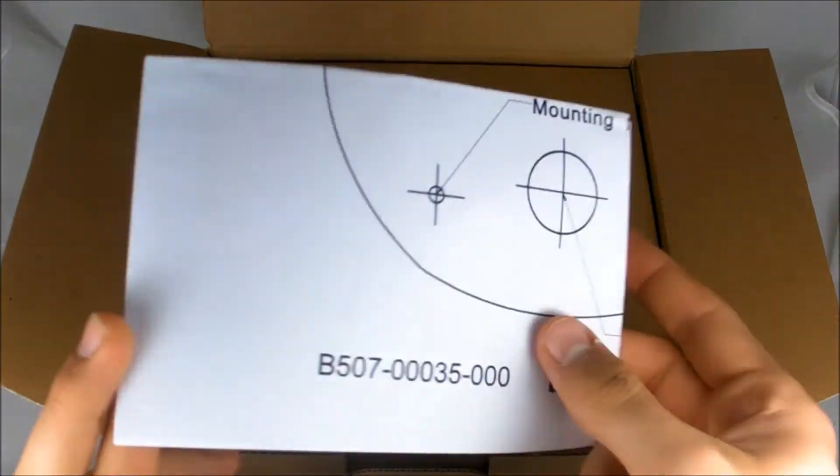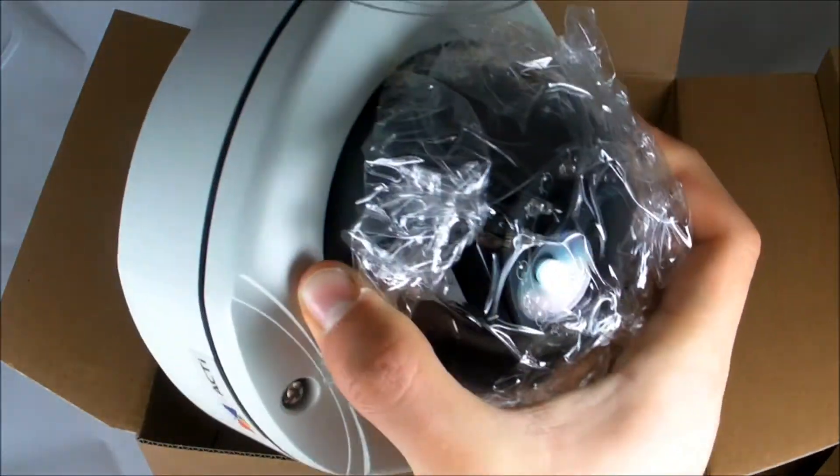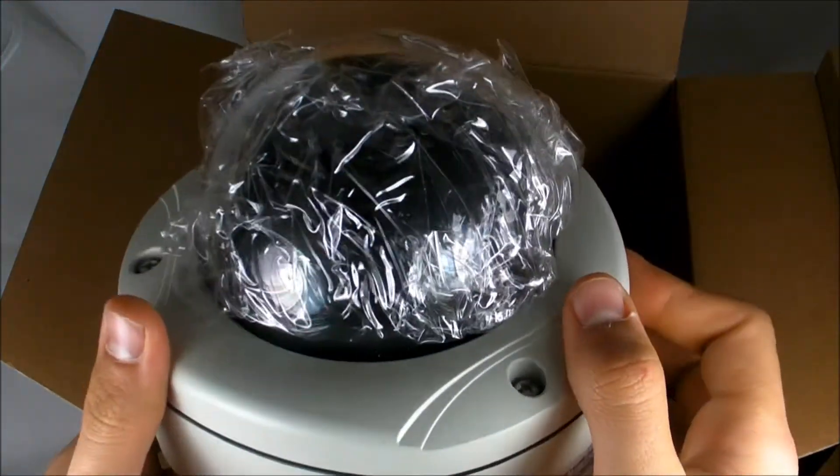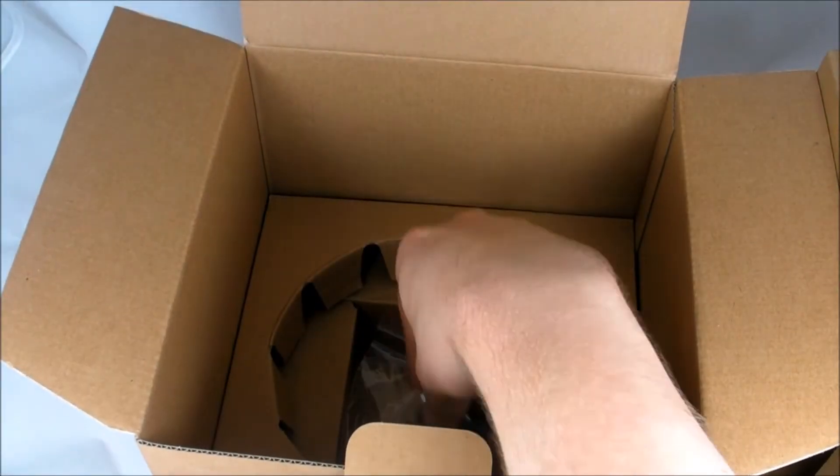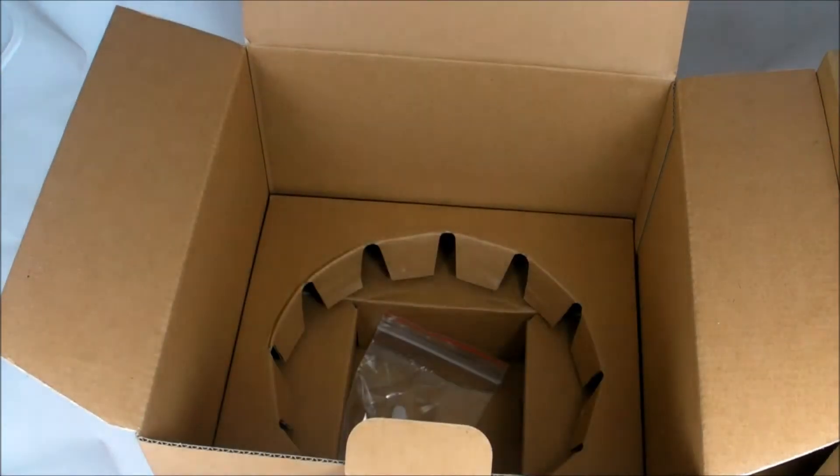Firstly we have the hardware warranty card, quick installation guide and the mounting template. Below this we have the D72 itself which we'll be taking a closer look at in just a minute. Lastly in the box we have the cable gland and the mounting screws.